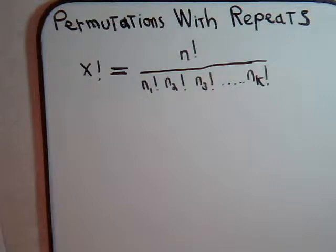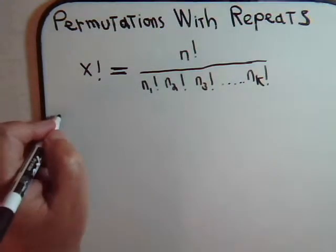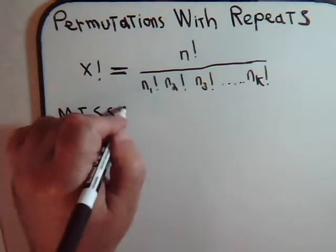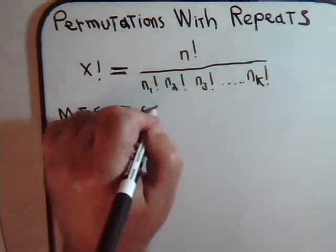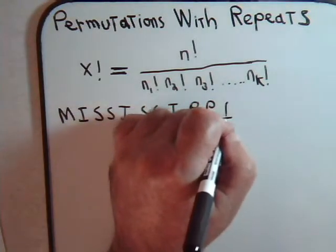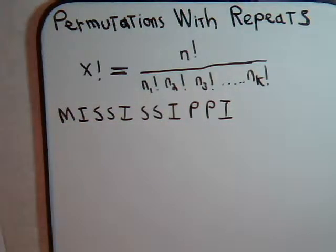For example, we were dealing with the word Mississippi, where the i's are repeated four times, the s's are repeated four times, and the letters p's are repeated two times.